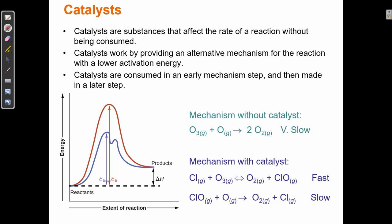So we've just found another piece of our mechanistic puzzle. This mechanism has two elementary steps. Does this mechanism have any intermediates? Yes. An intermediate is something that is formed after the first reaction and then used up as a reactant in a subsequent step. It's formed as a product and then used as a reactant, so it does not appear in the overall reaction because it gets cancelled out. So ClO is an intermediate.